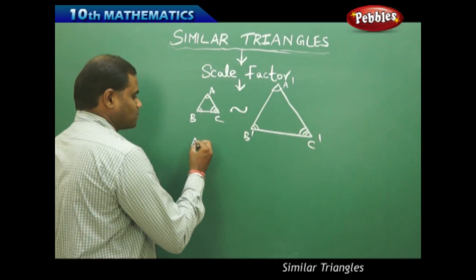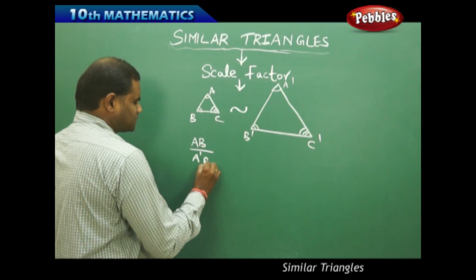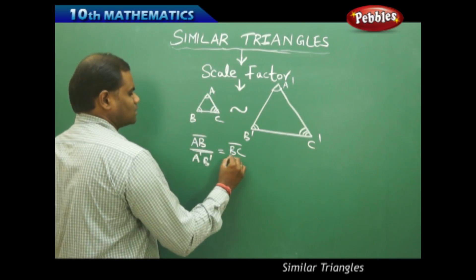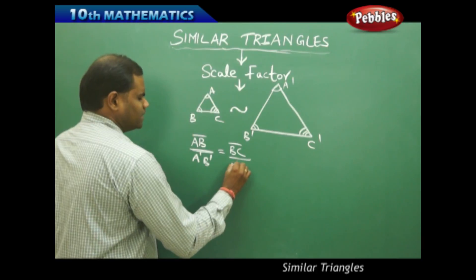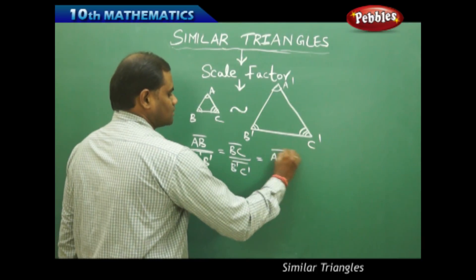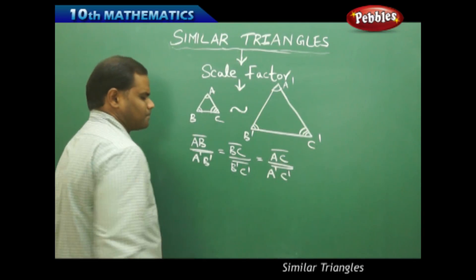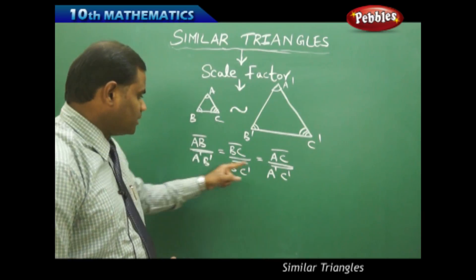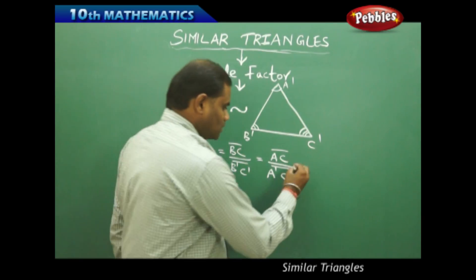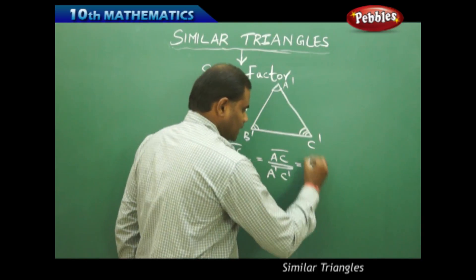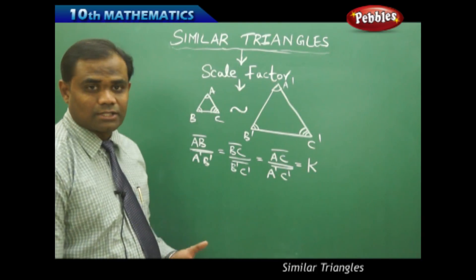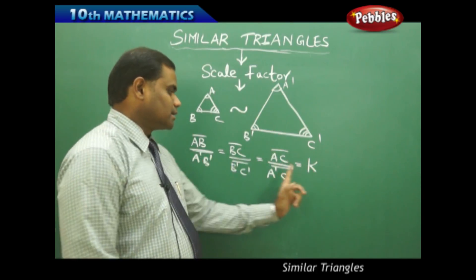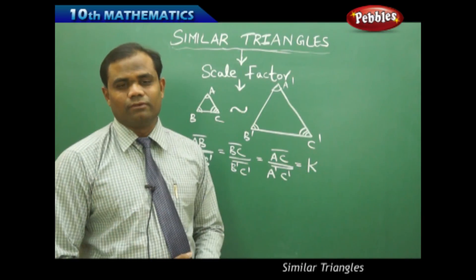Considering the corresponding sides: AB/A'B' equals BC/B'C' equals AC/A'C'. Since all three ratios are equal, they must each equal a common value K. The value obtained for each ratio is K, and this K is called the scale factor.